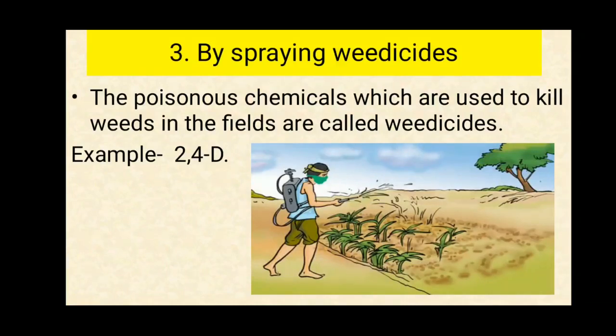Another method of destroying weeds is by spraying special chemicals called weedicides. Weedicides are poisonous chemicals which are used to kill weeds in the fields. The most common example of a weedicide is 2,4-D. A solution of the weedicide in water is sprayed on the standing crops in the fields with a sprayer.